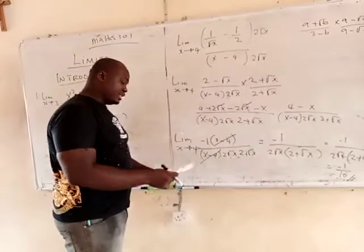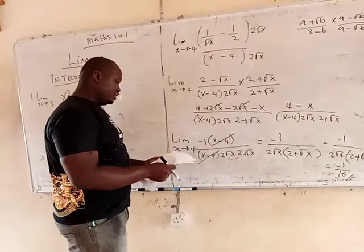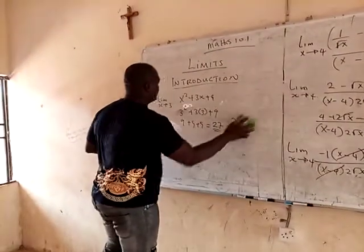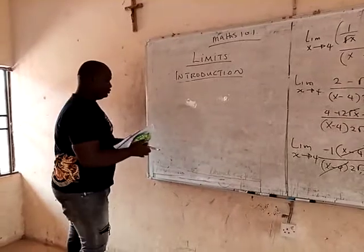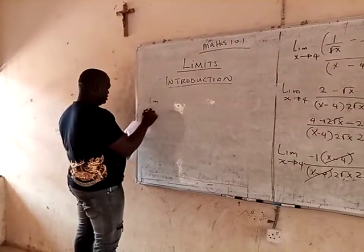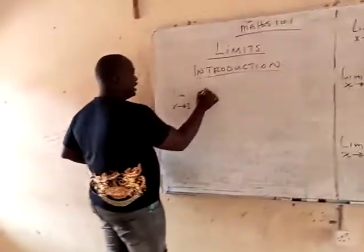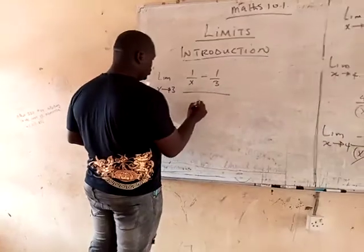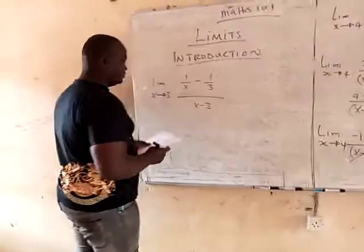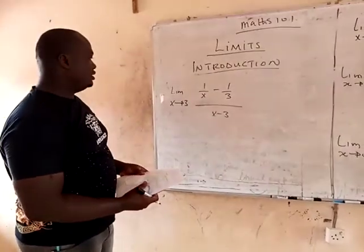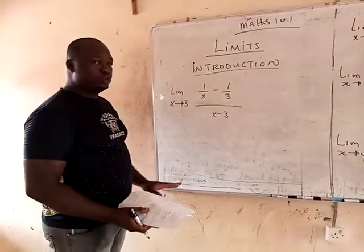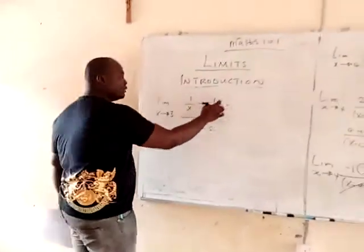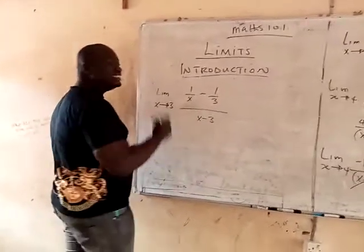Let me give you a more simple example right now. What if you have something like this: limit of s is equal to 3, and then you have 1 all over s minus 1 all over 3, all over s minus 3. Now, for you to solve this limit, there is no root, but this is a complex number. So what are you going to do? You are going to multiply the top and the bottom by its LCM.